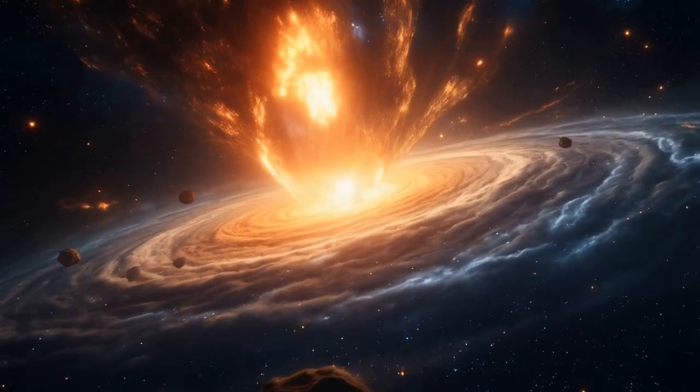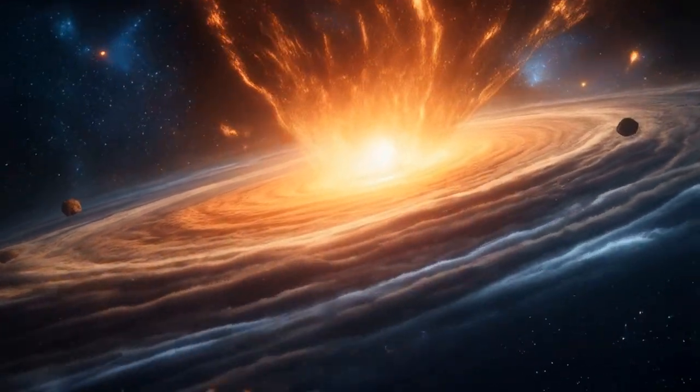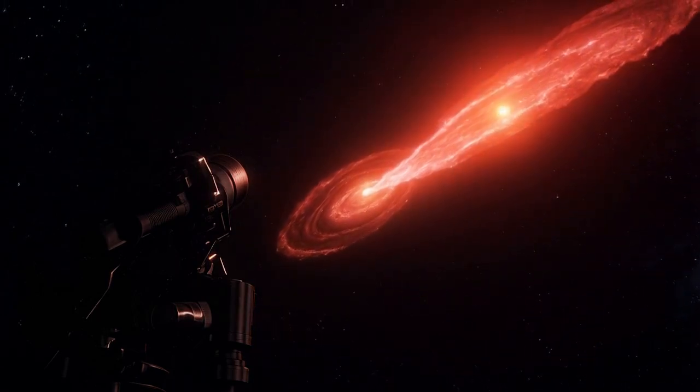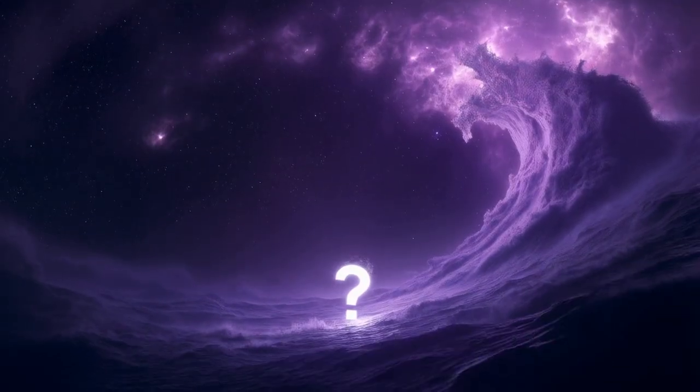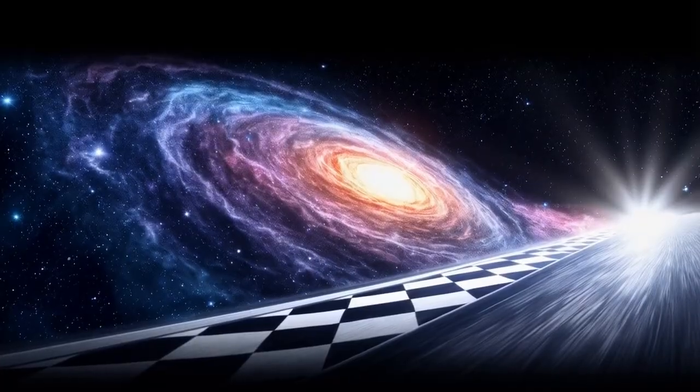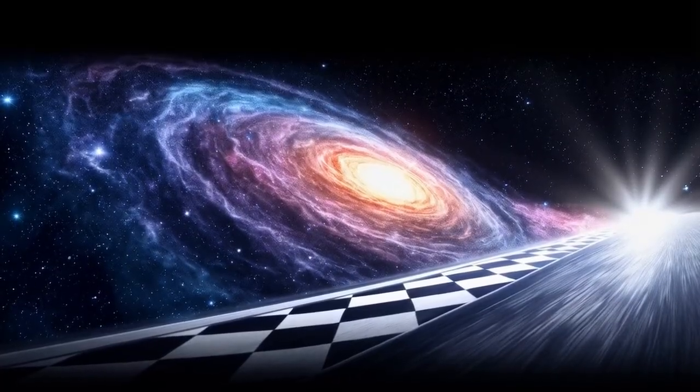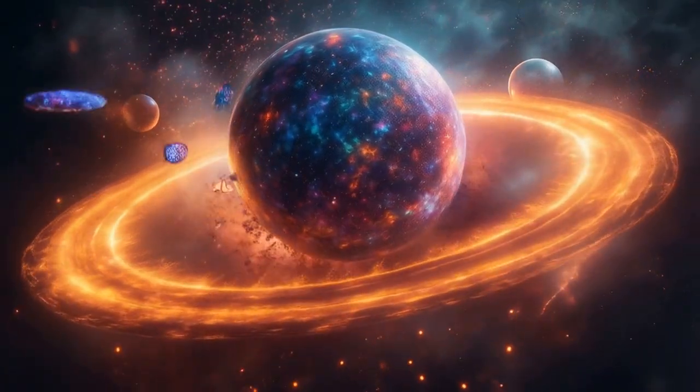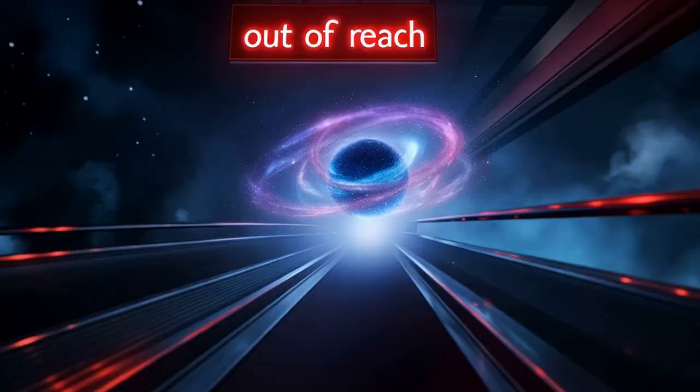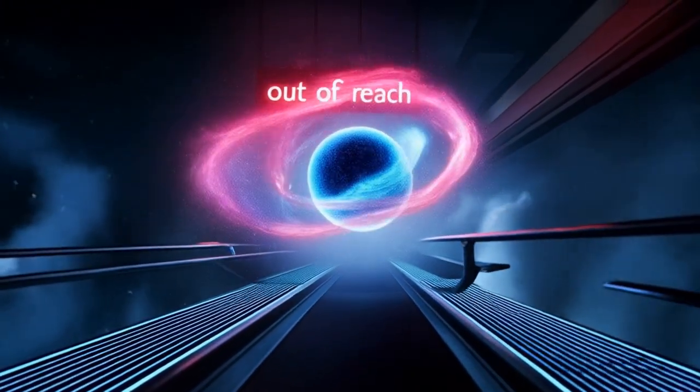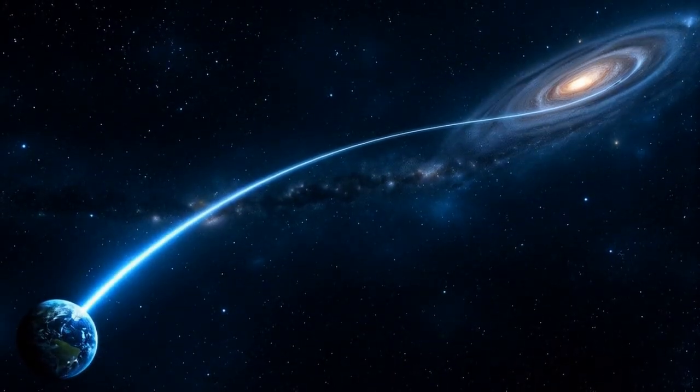This expansion isn't just happening in one direction. It's happening everywhere, in every direction, all at once. The universe has no center, no single point where everything started. Instead, every galaxy sees every other galaxy moving away, as if each one is at the center of its own expanding bubble. This universal stretching creates what astronomers call the observable universe, a sphere around us where light has had time to reach us since the Big Bang 13.8 billion years ago. Beyond that, there are galaxies we'll never see, carried away by the relentless expansion of space.